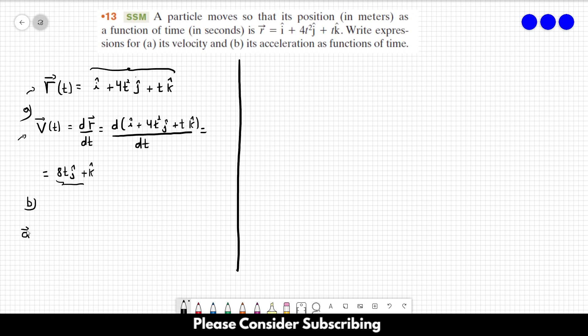So if you want the acceleration, we just have to derive the velocity in respect of time, and this would be the derivative of 8t in the j direction plus k in respect of time. And this is simply 8j meters per squared second. So this is the answer of letter B.